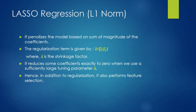What is lasso regression? It penalizes the model based on the sum of magnitude of the coefficients — that is, lambda multiplied by the sum of magnitude of the coefficients, where lambda is the shrinkage factor. It reduces the sum of coefficients exactly to 0 when we use a sufficiently large tuning parameter. Hence, in addition to regularization, it also performs feature selection, as once it reduces some coefficients to 0, a few features get deleted.